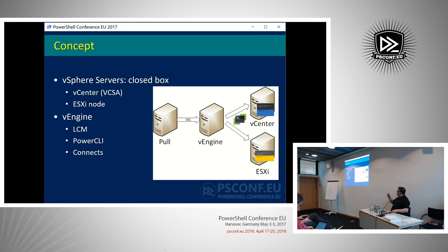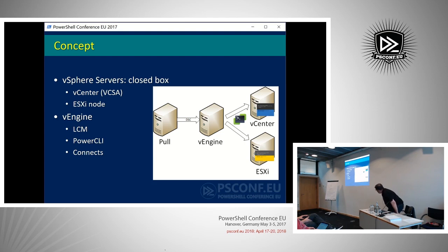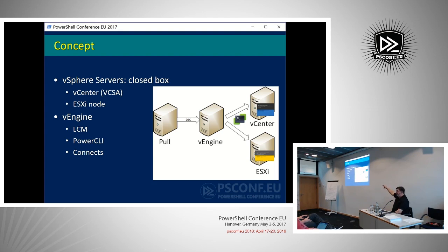What I did was use a machine — in the beginning a straightforward Windows box, which I call the vEngine — and installed an LCM agent on there. That's the one registered under DSC, the one where I push configurations towards. And in the module, through the API that vSphere offers, I could make changes to the vCenter and the ESXi hypervisor.